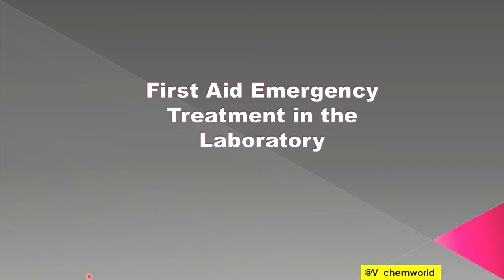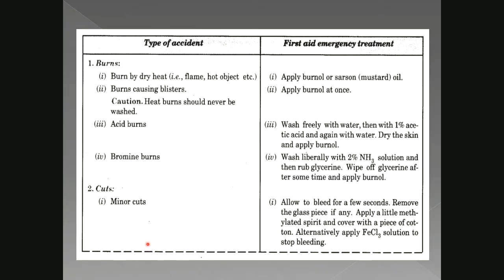If by chance any accident occurs in a lab, we do first aid emergency treatment. First: burns. Burns by dry heat, for example flame or hot object — apply burn oil or sunshine oil. Burn oil is an antiseptic oil. Then for burns causing caustic blisters, apply burn oil at once.